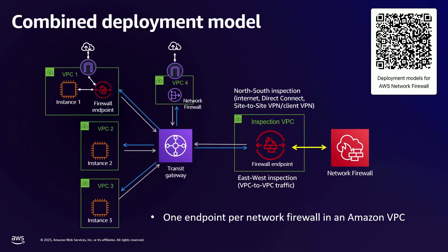Then there's the combined deployment model. It's the same as that centralized model with the Transit Gateway and a firewall endpoint, but in this situation we have an egress VPC for Internet connectivity, and we want a different firewall endpoint in that VPC — a different firewall. It filters traffic there and has its own policies. If you want the policies to be shared, the rule groups are modular and can be applied in other places. So two different firewall endpoints, two different VPCs.